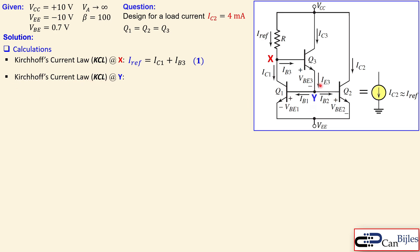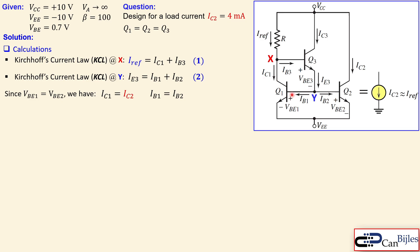Since VBE1 and VBE2 are exactly the same — both nodes sit at the same potential — the collector currents of Q1 and Q2 are equal: IC1 equals IC2. Also, since they have the exact same beta, IB1 equals IB2. This is a linear relationship. The emitter currents IE1 and IE2 are also equal, because the collector current plus the base current always equals the emitter current by KCL.